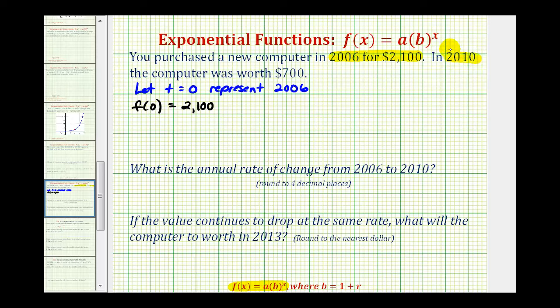Next we know that in 2010 the computer is worth $700. So if the year is 2010 that means t is equal to 2010 minus the base year of 2006, so t is equal to four, which means f of four must equal $700. So it's important to remember t is the number of years after our base year of 2006.